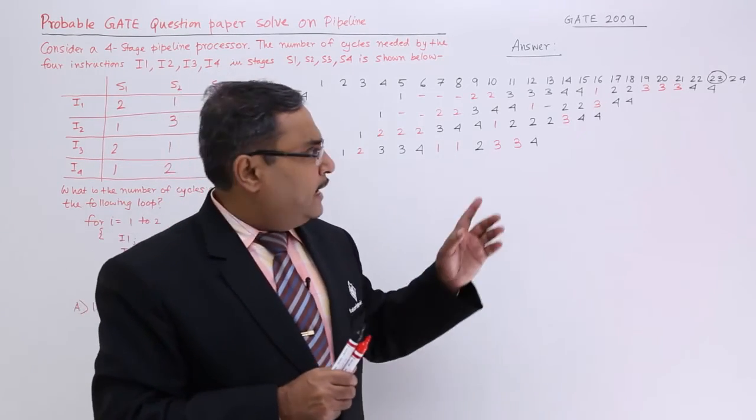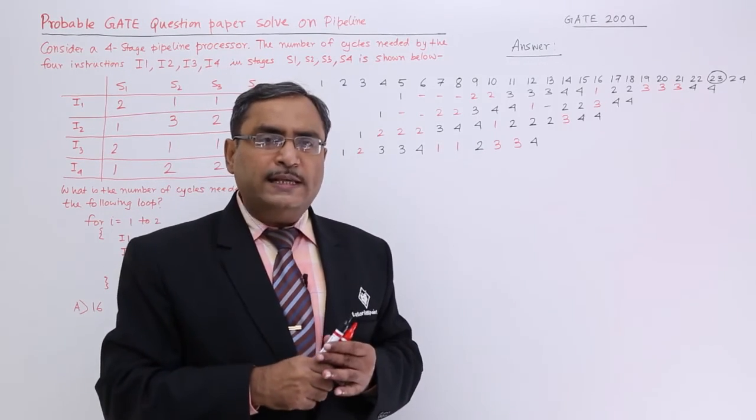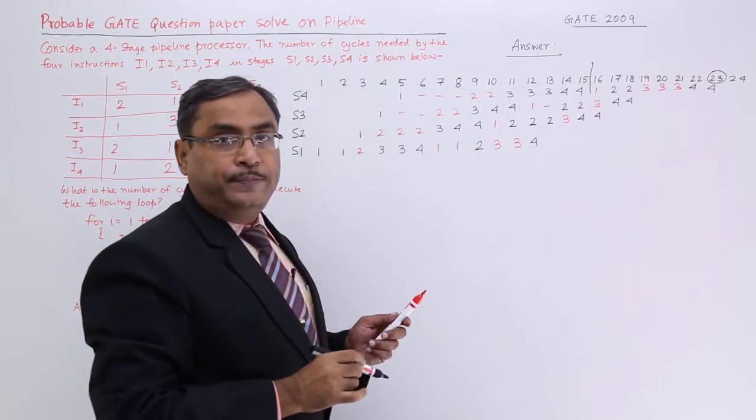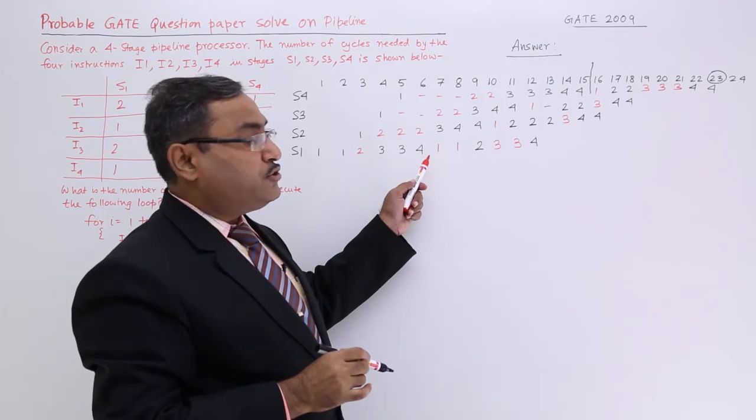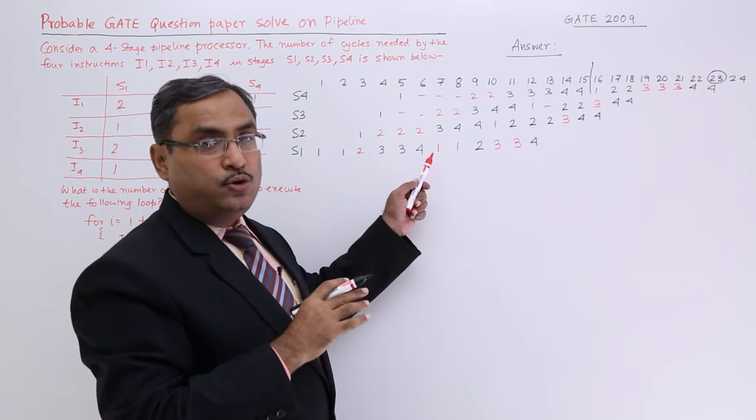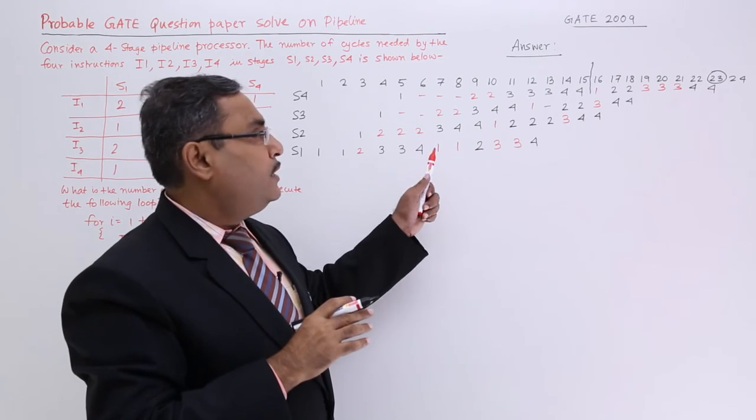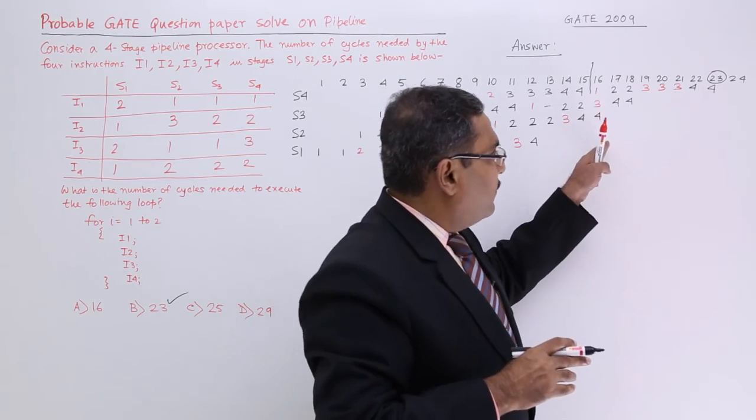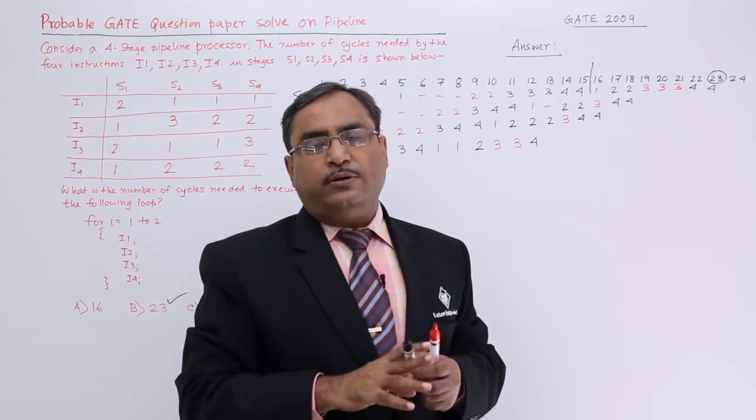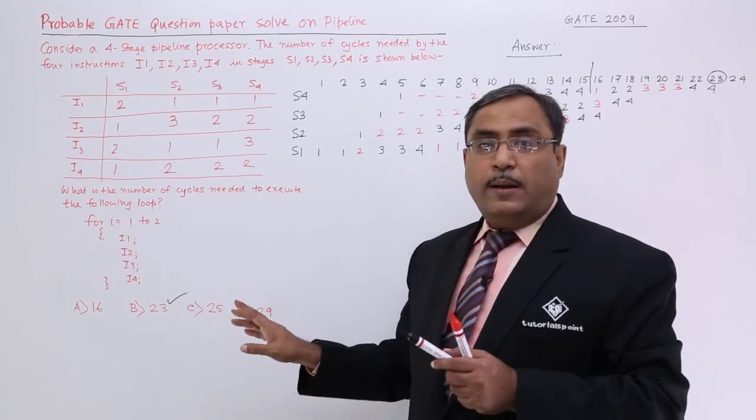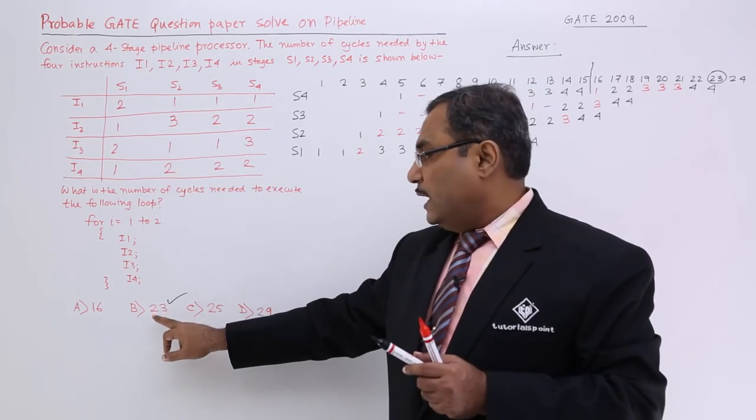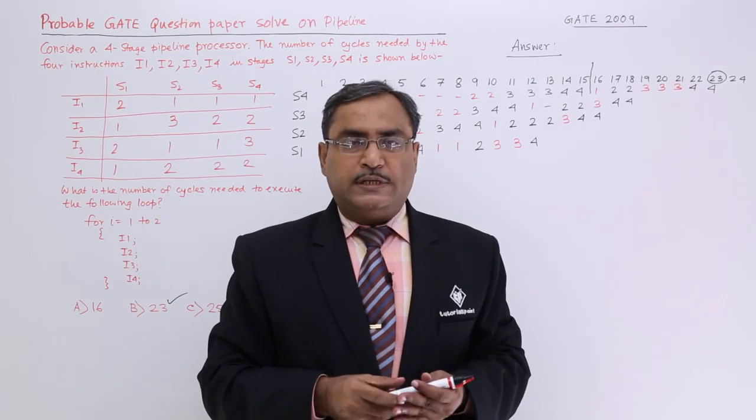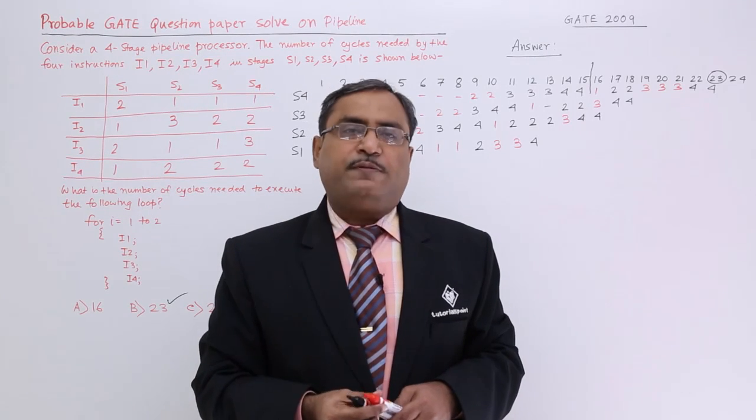Now you see if here we are allowing loop-wise parallelism. That means the first loop got completed at 15 steps. So another loop has got started. I have judged this one as a loop-wise parallelism. Otherwise what will happen? It will take 15 and then again it will start from here and it will take 15. In that case it will take 30. Fortunately I am not getting 30 in the options. That is why I will be sticking with that 23. In this way you can solve such problems. Please practice such problems more. Thanks for watching this video.